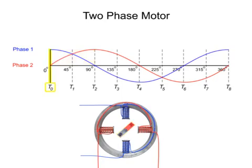At time 0, phase 1 produces maximum vertical magnetic flux, and the rotor aligns itself vertically with the stator poles. Because phase 2 provides no current flow to the stators, there is no horizontal pole on the rotor.